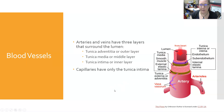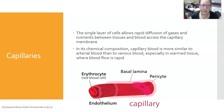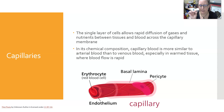Capillaries are thin and only have the tunica intima — they are made solely of endothelium. Arteries carry blood away from the heart and have thick muscular walls that can expand when blood is pumped into them, then contract to maintain flow and pressure during diastole. Arteries are located deeper than veins but can be found by feeling for a pulse. Arteries branch into smaller arterioles, which then branch to form capillaries. Capillaries are a single layer of cells so thin that red blood cells must pass through single file.